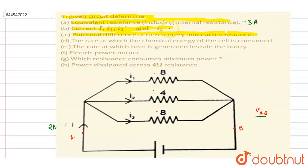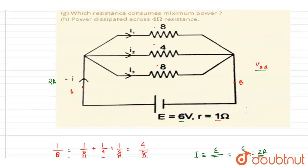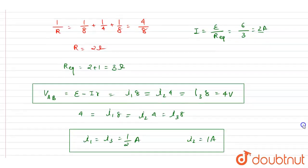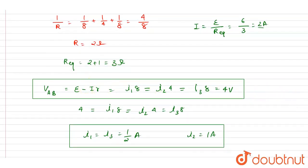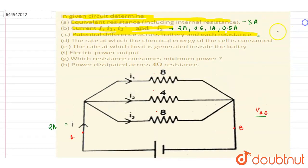To summarize: the total current i is 2 amperes, i1 = 0.5 A, i2 = 1 A, and i3 = 0.5 A. All three parallel resistors have the same potential difference across them, which is e − ir = 4 volts.